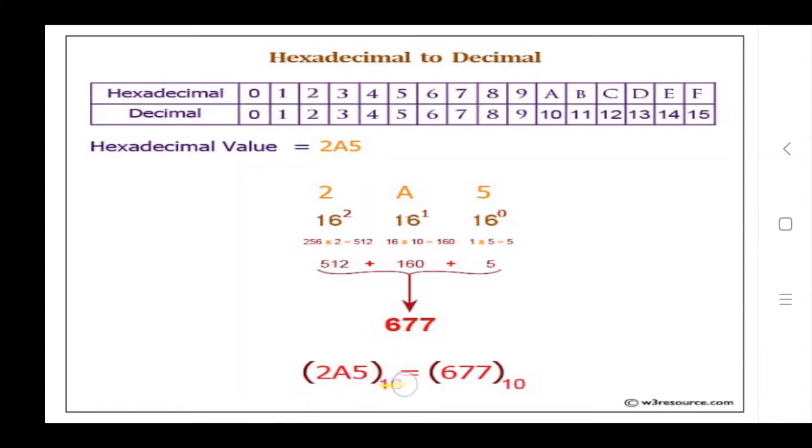Here I take hexadecimal value 2A5, then convert into decimal form 677. Now I will demonstrate the program.